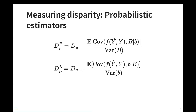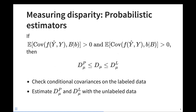What's nice about this construction is that in the limit, each estimator can be written as a function of the true disparity D-mu and two terms — the numerators for both are conditional covariance terms and different variances. Because variances are always positive, what really matters for bounding the true disparity is the signs of these conditional covariance terms. When both conditional covariance terms are positive, we can guarantee that we bound the true disparity between our two estimates. In practice, using the small labeled data set available, we can check those conditional covariance conditions.